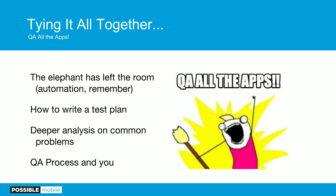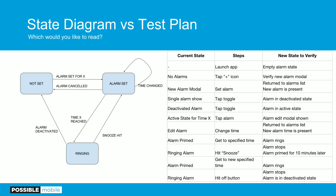To tie it all together: this wasn't really a talk on automation — it was about mobile QA in general. We had that very simple happy path test plan, and if you're gung-ho about automation, that might be a good place to start — happy paths are easier to automate than some of the other edge cases. And then we did some deeper analysis on common problems.